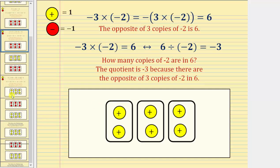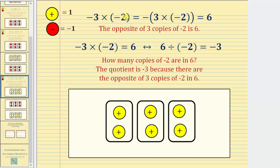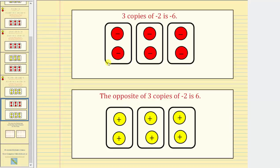For our last example we have negative 3 times negative 2. Again, we'll view this negative as the opposite and write this product as the opposite of 3 times negative 2, which equals positive 6, because the meaning of this product is the opposite of 3 copies of negative 2 is positive 6. To model this, we begin with 3 copies of negative 2, which is negative 6. Because we want the opposite, we change the sign of all the integer chips so they all become positive. Here's the model for the opposite of 3 copies of negative 2, which we can see is positive 6.